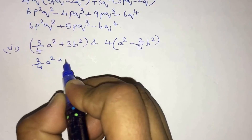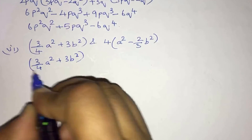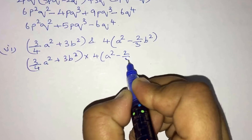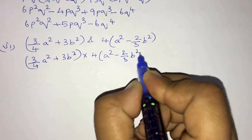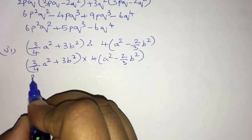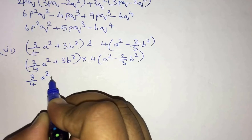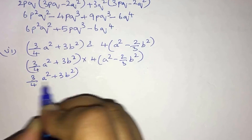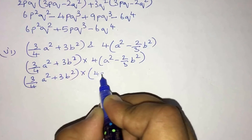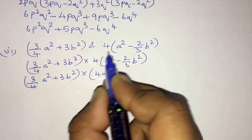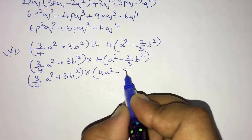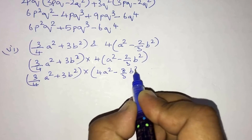Question number 6: multiply (3/4 a² + 3b²) into (4a² - 2/3 b²). Taking 4 inside, we rewrite the second binomial. Then 3/4 a² into 4a² gives 3a⁴, and 3/4 a² into -8/3 b² gives -2a²b².